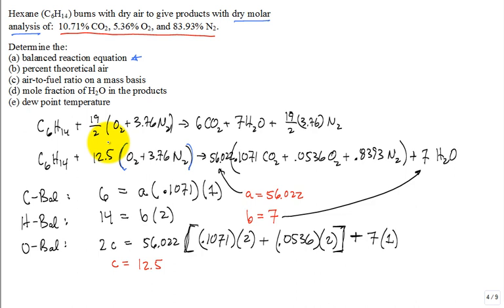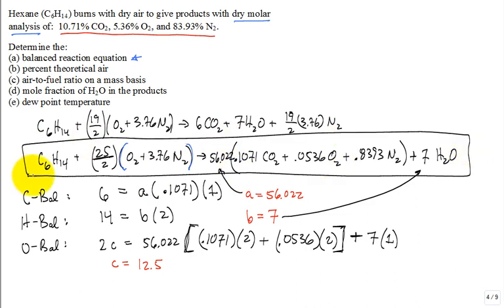What is 12.5 as a ratio? Something over 2. What is it? 25 over 2, is that correct? So I like to work with 25 over 2, because I had 19 over 2 for the 100% theoretical air. Can I box this and call this the answer to part A, which is now my balanced reaction equation?